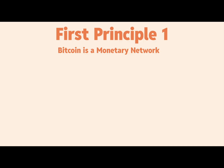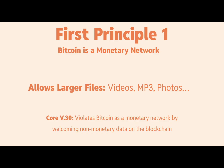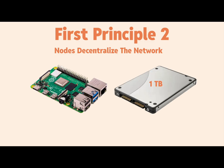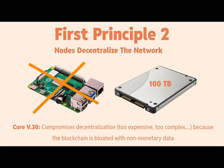Now let's compare Bitcoin Core version 30 to our first principles. First Principle One: Bitcoin is a monetary network. Core v30 allows larger files onto the blockchain — videos, MP3s, larger photos — none of which are monetary transactions. Objectively, version 30 violates Bitcoin as a monetary network by welcoming non-monetary data onto the blockchain. Opening up the filters to that extent is essentially saying 'feel free to upload these large files.'